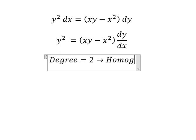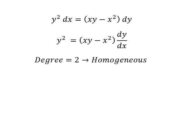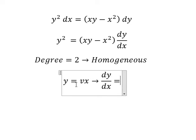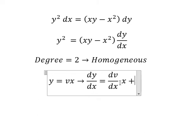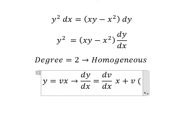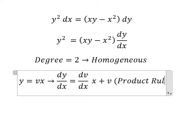This is homogeneous, so we have y = vx. Later we do the first derivative for both sides and we have dy/dx = dv/dx multiplied by x. This is the product rule of derivatives.